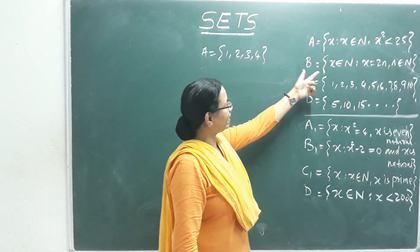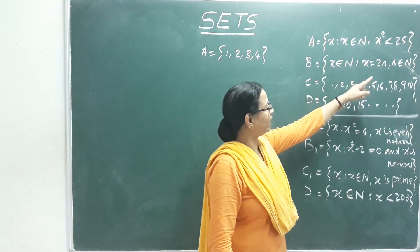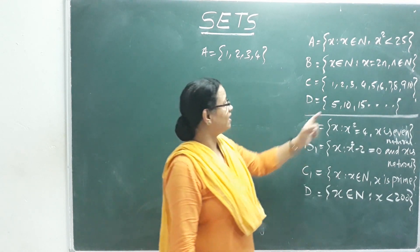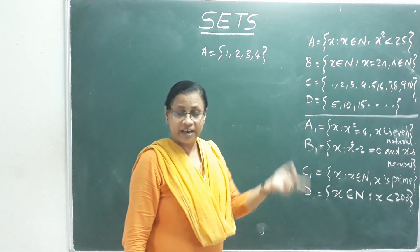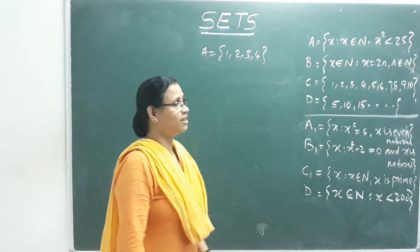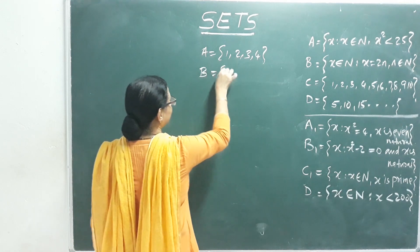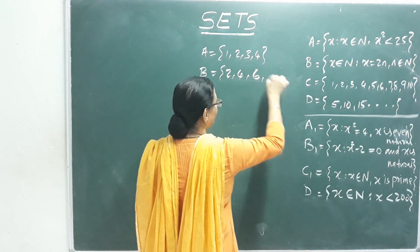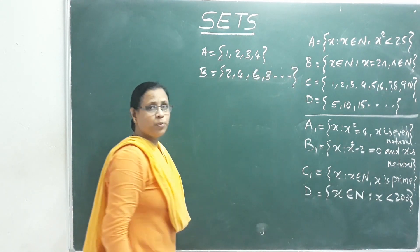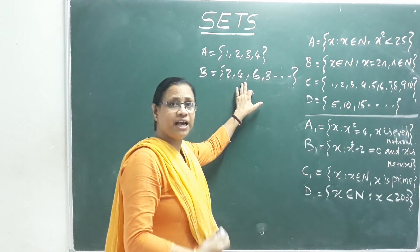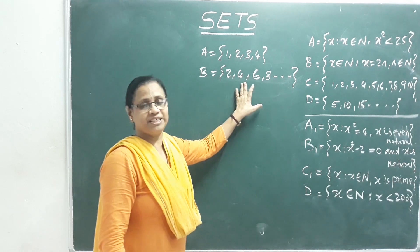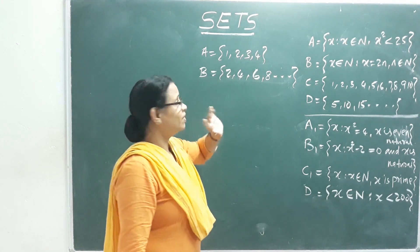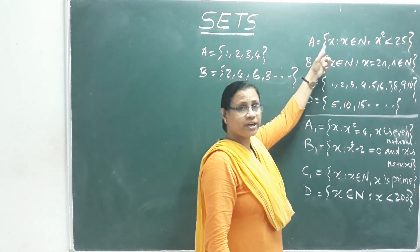Second example: B = {x ∈ N : x = 2n, n ∈ N}. This means multiples of 2: 2, 4, 6, 8... This set continues infinitely, so its cardinality is infinity — it is an infinite set. The set builder form describes x as a multiple of 2.